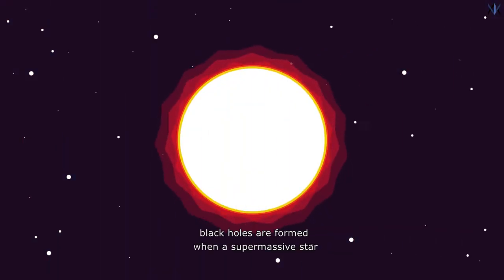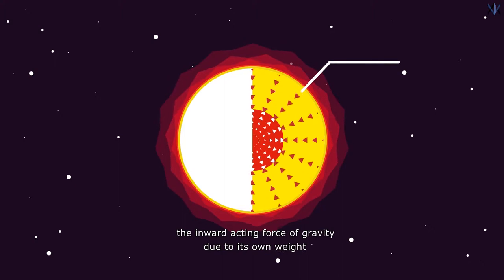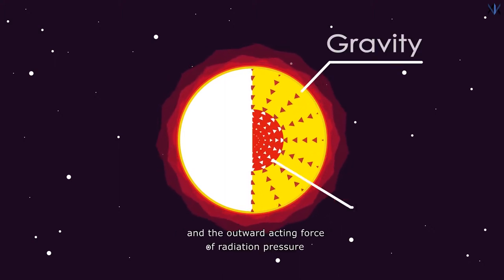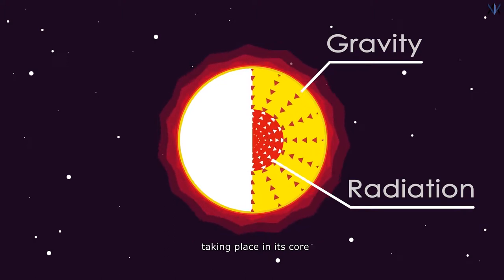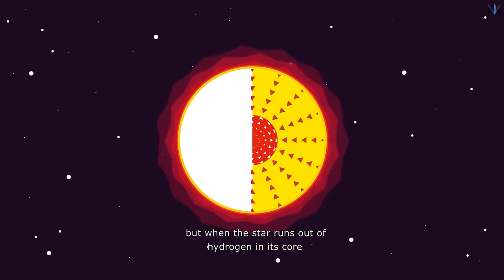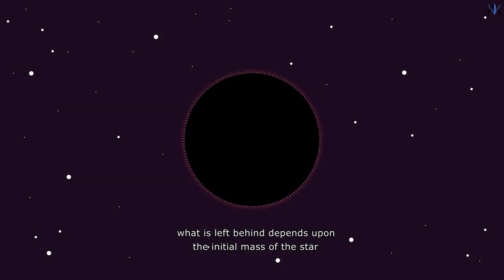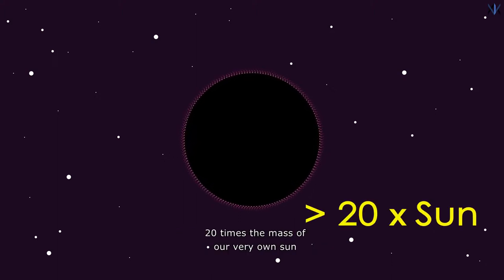Black holes are formed when a supermassive star runs out of fuel and dies. Any star in the universe has two major forces acting on it: the inward acting force of gravity due to its own weight, and the outward acting force of radiation pressure due to nuclear fusion reactions taking place in its core. Both these forces counteract each other and keep the star shining. But when the star runs out of hydrogen in its core, it starts to collapse. What is left behind depends upon the initial mass of the star. A star with mass more than 20 times the mass of our sun will give a black hole.